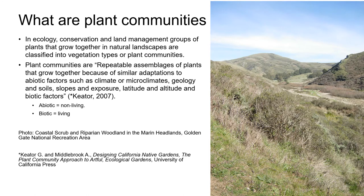In the previous unit you learned that there are three floristic provinces in California: the California Floristic Province, the Desert, and the Great Basin Floristic Provinces. You also heard that within these floristic provinces the type of plants or vegetation can vary — sometimes dramatically — within short distances.